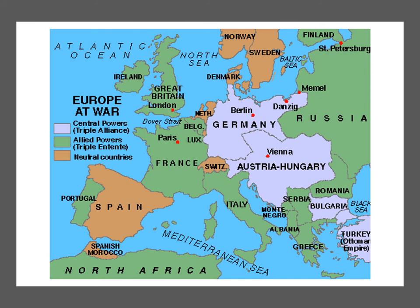We tend to think of this as primarily a European war, and that's not completely wrong. It was a war about empires fighting each other — the French Empire, the German Empire, the Austro-Hungarian Empire, the British Empire (which was the largest), the Russian Empire, and to a smaller degree the Ottoman Empire — basically today's Turkey — the remnant of the Muslim world we discussed at the beginning of class.